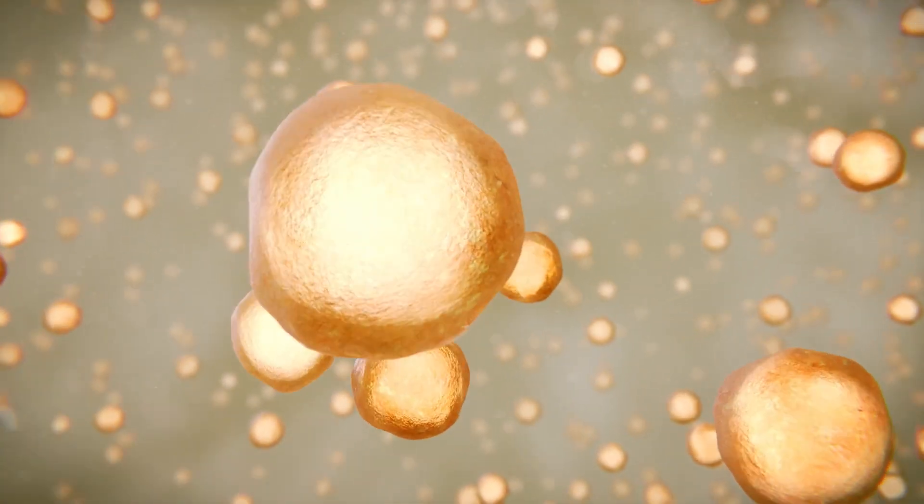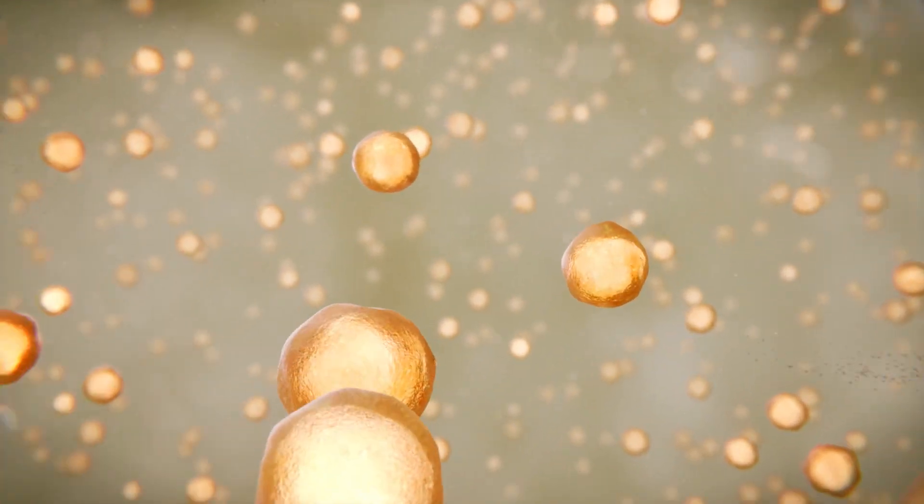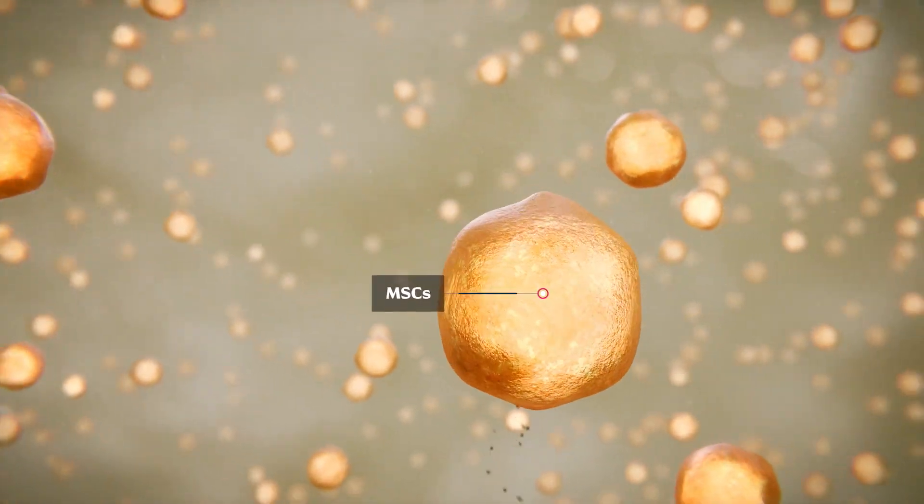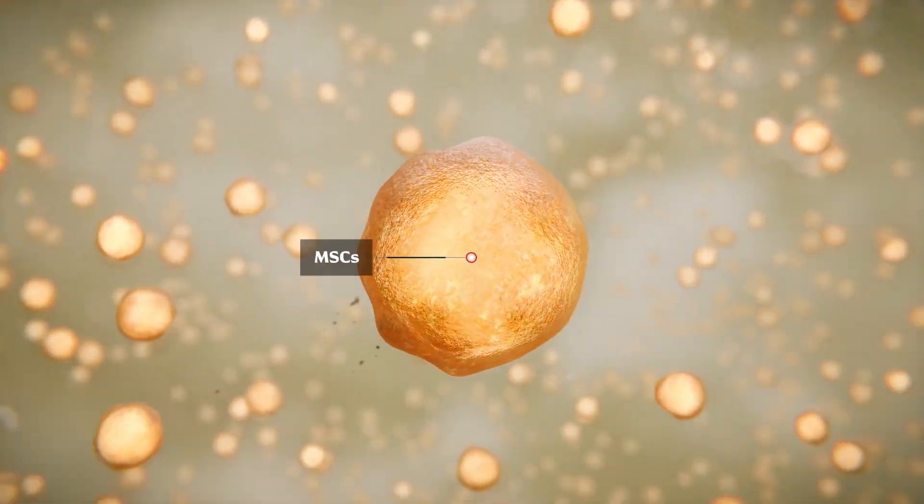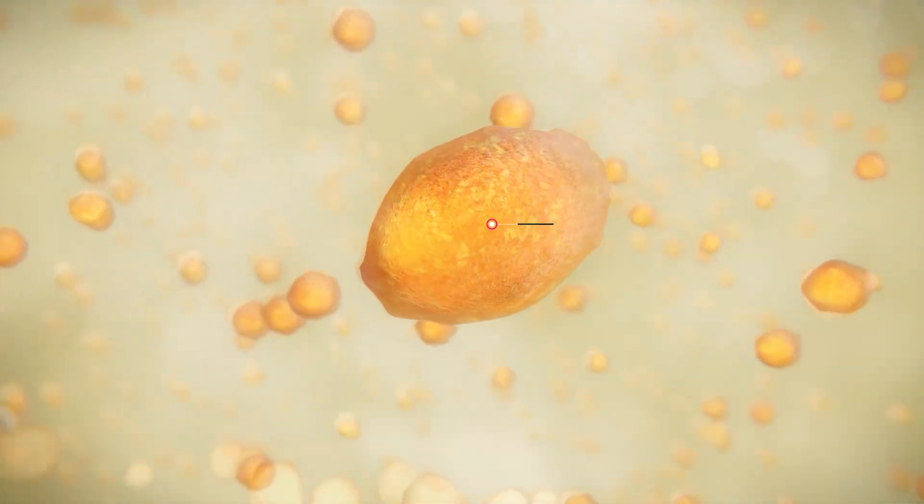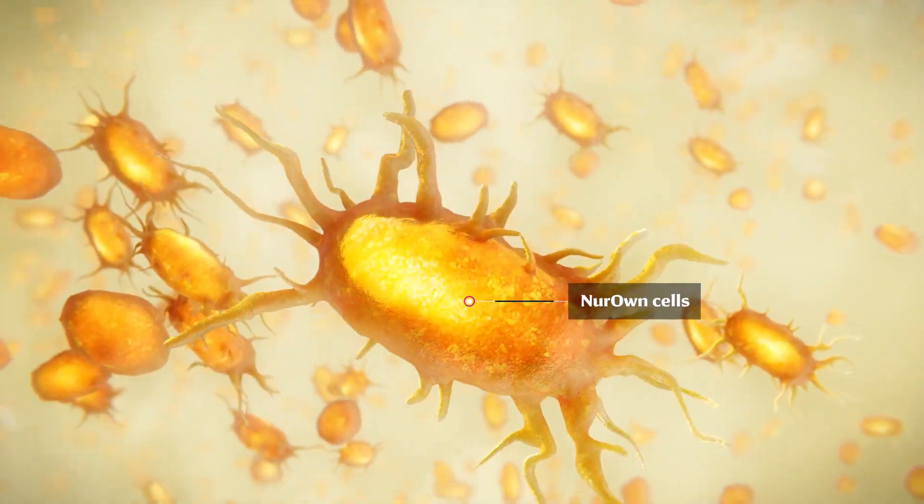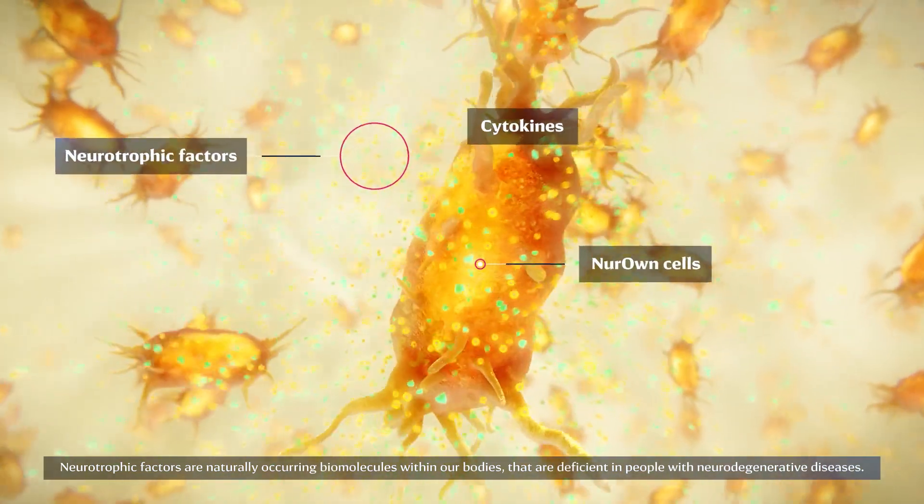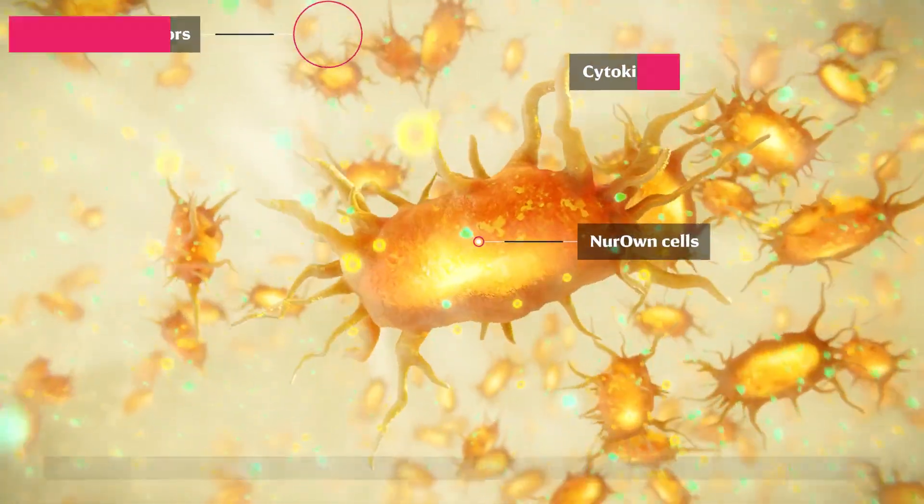The MSCs are grown in an FDA-approved cleanroom manufacturing facility using Brainstorm Cell Therapeutics' proprietary neuron technology to make them into neuron cells that release high levels of neurotrophic factors, which help nerve cells repair, grow, and survive and reduce the production of inflammatory factors.